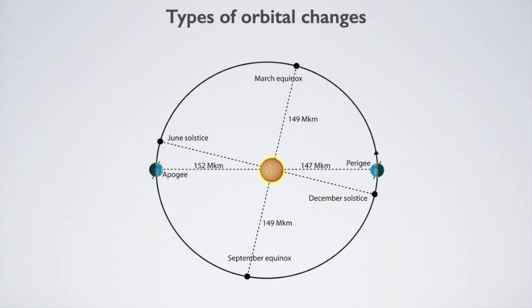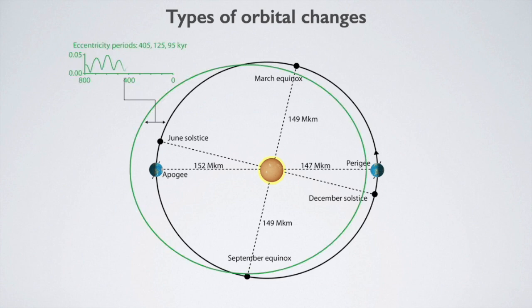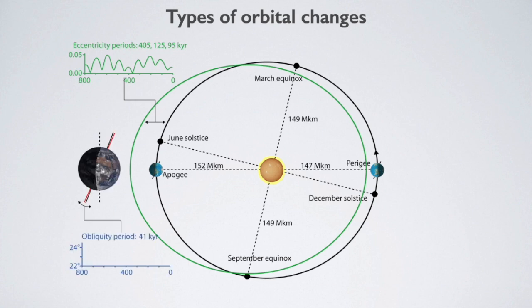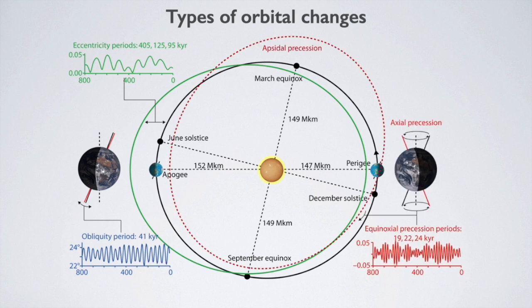There are three types of orbital changes. Changes in the eccentricity of the orbit, which produce cycles of 425,000 and 95,000 years. Changes in the inclination of the axis, which produce cycles of 41,000 years. And changes in the precession of the orbit and axis, which together produce cycles of 19,000, 22,000 and 24,000 years.